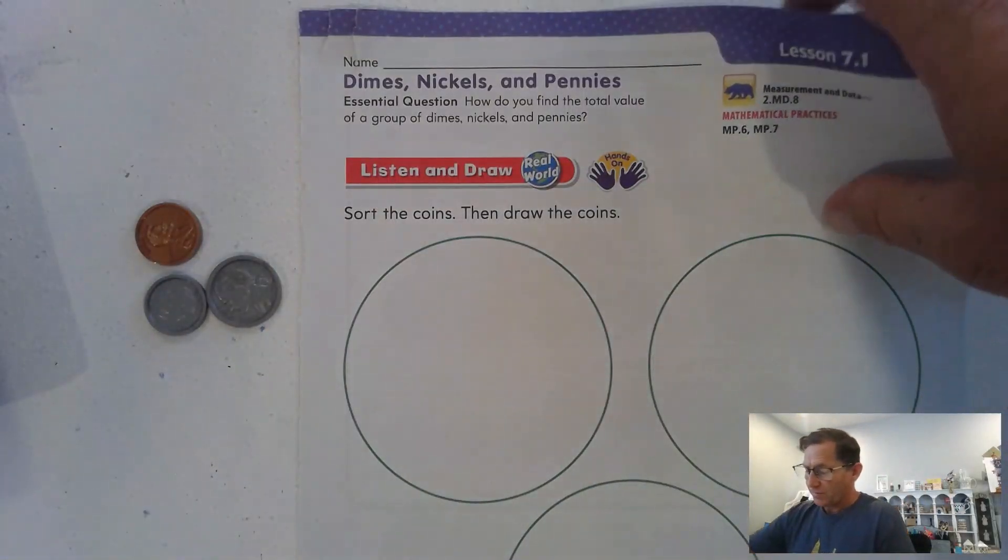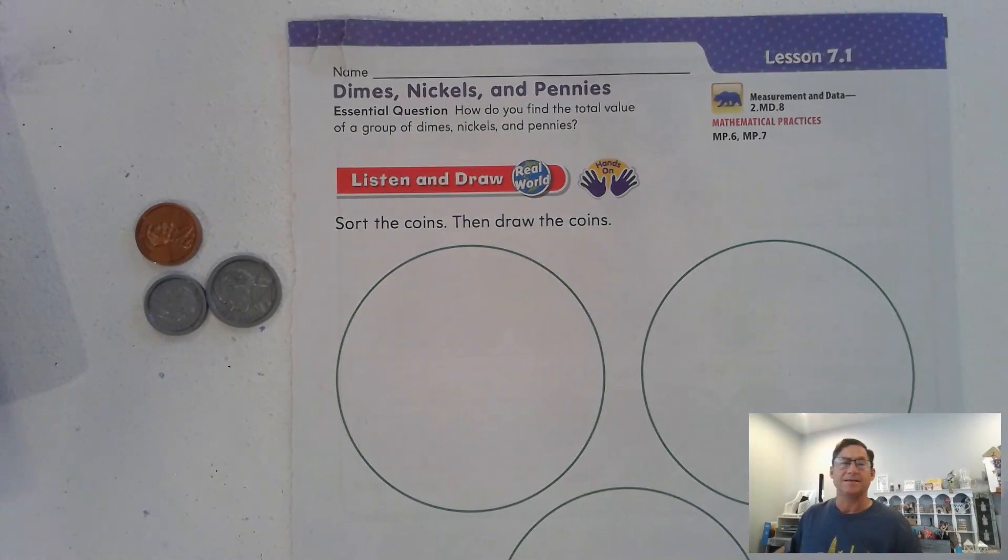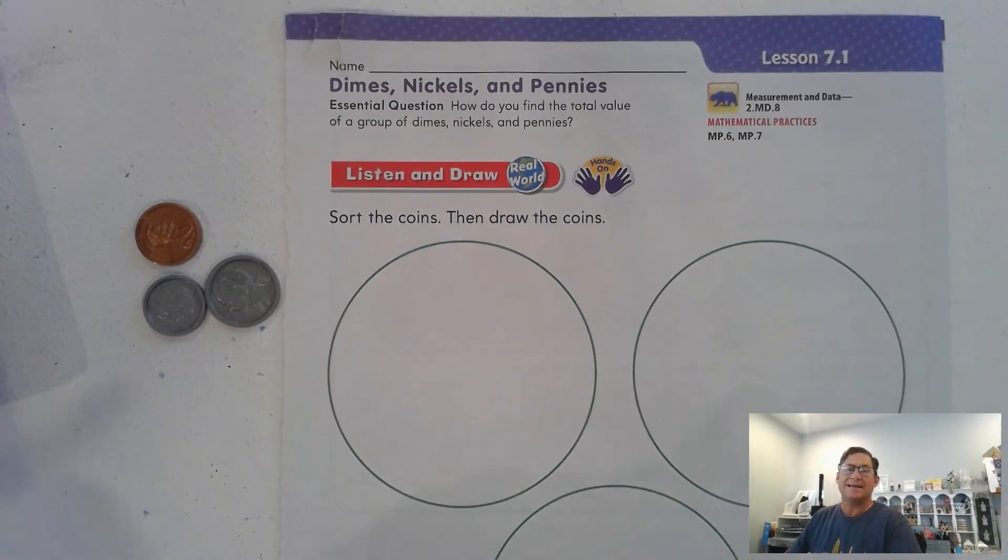Hello everybody, we're going to begin Chapter 7, Lesson 1. Our topic is dimes, nickels, and pennies. Chapter 7 is about time and money, so how do you find the total value of a group of dimes, nickels, and pennies?